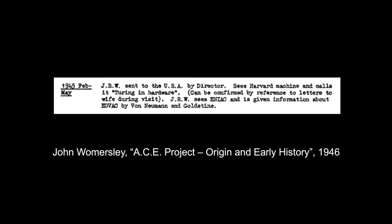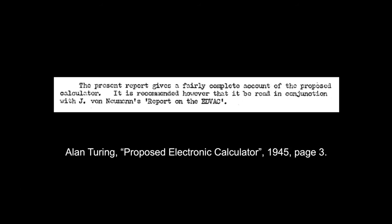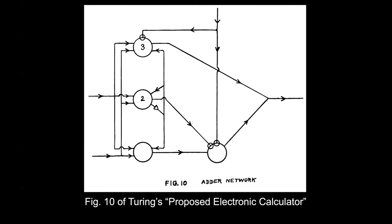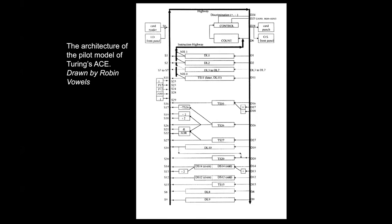Turing's design document shows definite traces of the influence of von Neumann's First Draft — for example, in a diagram of an adder where Turing uses von Neumann's McCulloch-Pitts-style neuron notation for representing logical circuits. Nevertheless, Turing didn't follow von Neumann's architectural proposals. Unlike von Neumann's design, Turing's computer had no central processing unit. The ACE had a decentralized architecture with its logical and arithmetical functions distributed among its various memory units. Turing's ACE project caught the attention of the British press — in one cutting, 'ACE superior to US model,' the British journalist was right: the ACE did have a bigger memory.